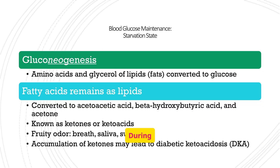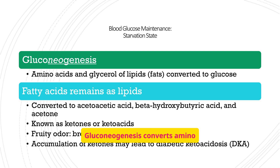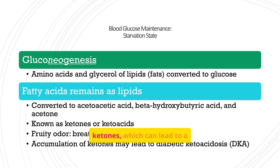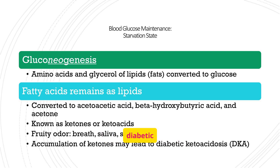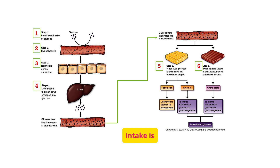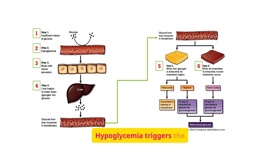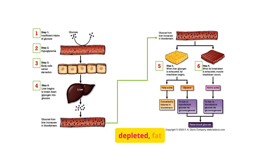During starvation, our body has mechanisms to maintain blood glucose. Gluconeogenesis converts amino acids and glycerol into glucose. Fatty acids are converted into ketones, which can lead to a fruity odor in breath and, if accumulated, diabetic ketoacidosis, DKA. When glucose intake is insufficient, hypoglycemia triggers the liver to break down glycogen. Once glycogen stores are depleted, fat breakdown begins, followed by muscle breakdown if starvation continues.